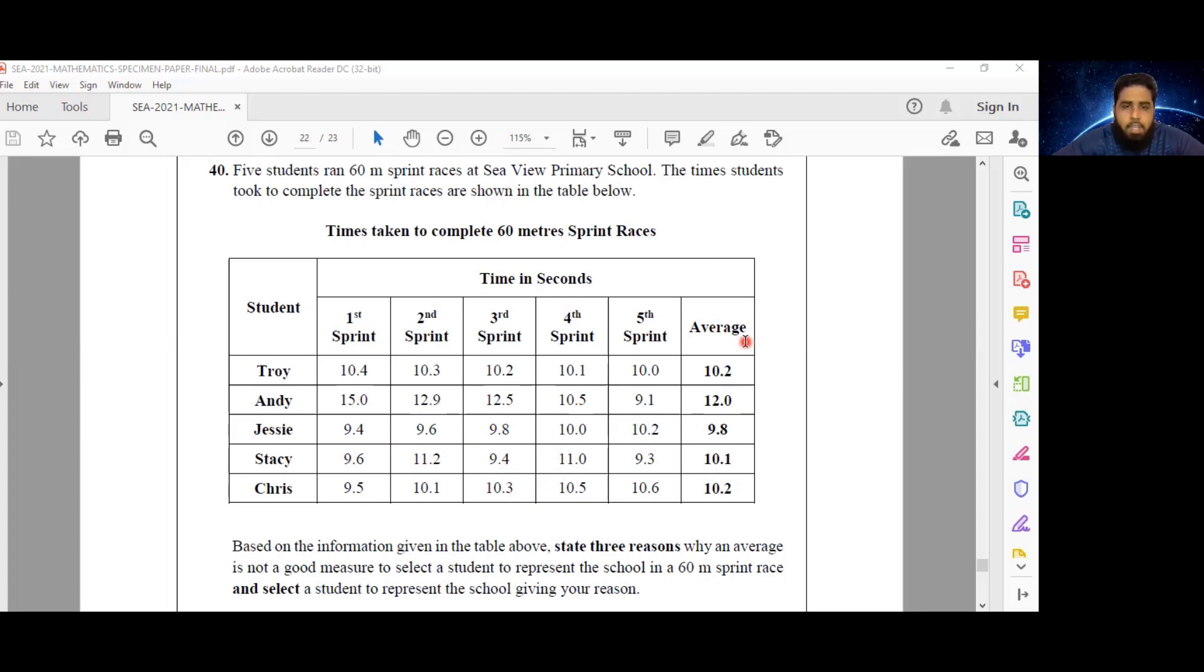And we also can't account for perhaps a runner having a bad race here or there for some reason that won't normally happen. So those are the three main reasons why an average would not be ideal here for picking somebody to represent the school, one of these runners to represent the school in the 60-meter sprint race.